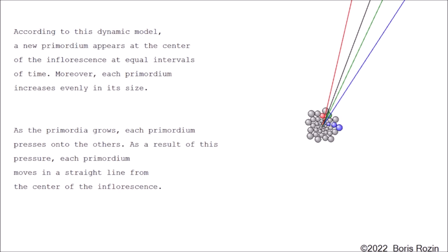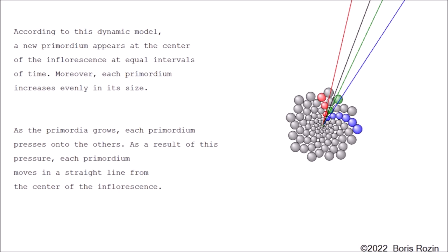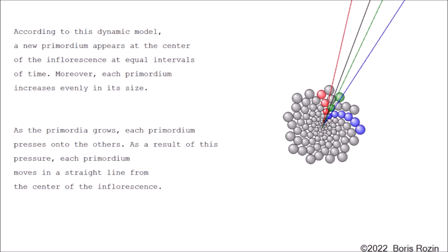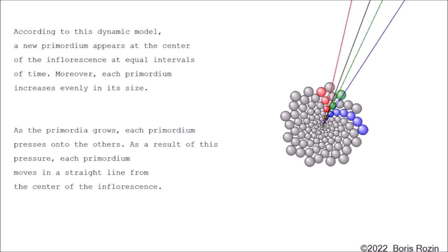According to this dynamic model, a new primordium appears at the center of the inflorescence at equal intervals of time. Moreover, each primordium increases evenly in its size. As the primordia grow, each primordium presses onto the others. As a result of this pressure, each primordium moves in a straight line from the center of the inflorescence.